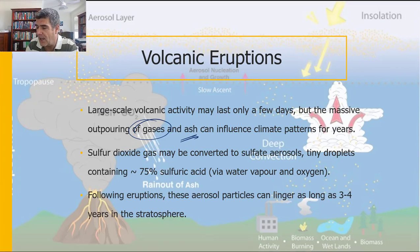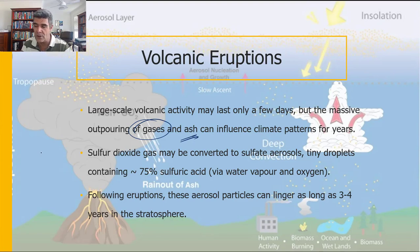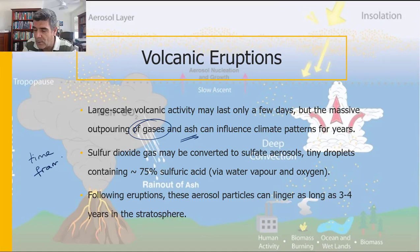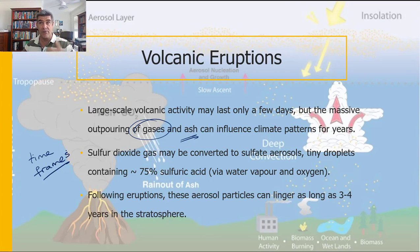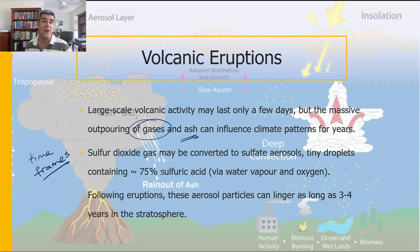When looking at climatic changes, you want to think about time frames. What we sometimes see is that the change caused by a volcanic eruption in the short term is reversed for what we might see in the longer term. Let's explore a few of the potential consequences of volcanic eruptions in terms of their impact on the climate.